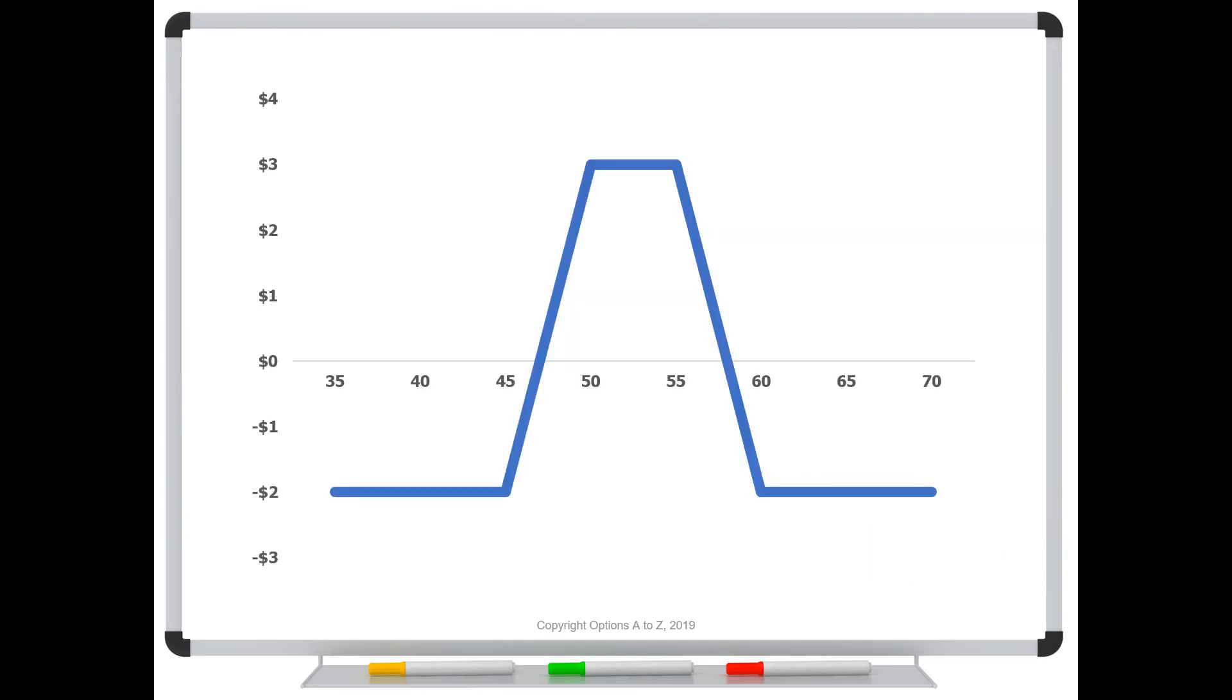Here's the profit and loss diagram for a long condor created with all calls. In this version, we are long the 45 call, short the 50, short the 55, and then long the 60. I've talked about this before, but we always get a bend at the various strikes. You can see right here, I've got four different bends because we have four different strikes. But notice it is a neutral strategy. We need the stock price to stay definitely between the two break evens, but preferably between 50 and 55 to get that maximum gain. We want the stock to stay still.